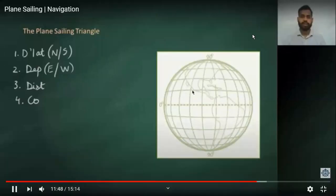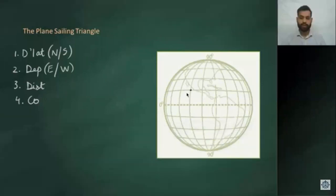In the plane sailing triangle, we have the d lat, difference of latitude, which is north-south; departure, that is the difference in longitude east-west at that latitude; and distance and course that we have to find out. Difference of latitude is d lat, and this is your departure between A and B. This is your plane sailing triangle.